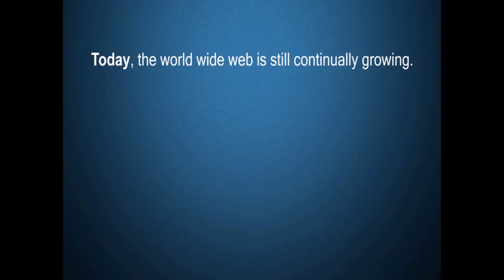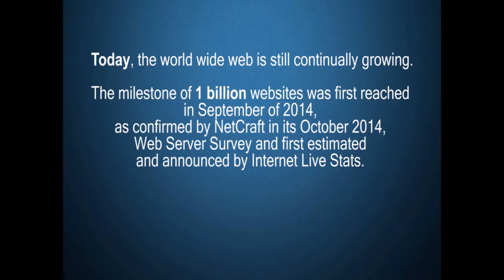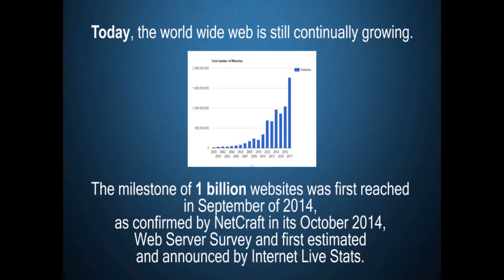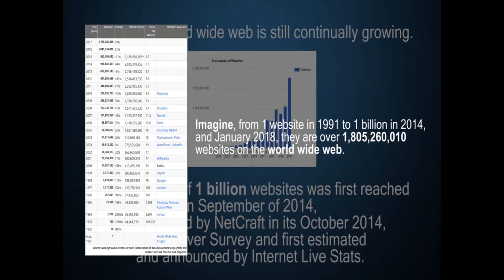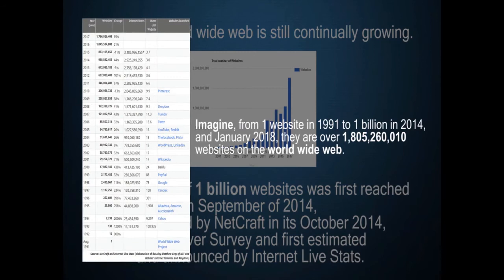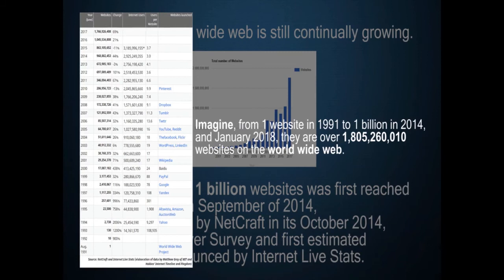Today, the World Wide Web is still continually growing. The milestone of 1 billion websites was first reached in September of 2014, as confirmed by Netcraft in its October 2014 web server survey and first estimated and announced by Internet LiveStats. Imagine — from one website in 1991 to 1 billion in 2014 — and as of January 2018, there are over 1,805,260,010 websites on the World Wide Web.